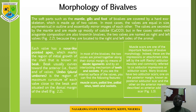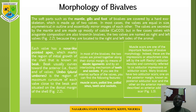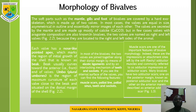Morphology of bivalves: the soft parts such as the mantle, the gills, and the foot of bivalves are covered by a hard exoskeleton made up of two valves. In most cases the valves are equal in size, symmetrical in outline, and essentially mirror images of each other. The valves are secreted by the mantle and are made up of calcite, though in a few cases valves with aragonite composition are also known. In bivalves, the two valves are named as right and left valves because they are located on the right and left side of the animal. Each valve has a nose-like pointed apex which marks the region of initial growth of the shell, known as the beak. The beak usually curves towards the anterior end of the valves. The umbo is the region of maximum curvature of each valve close to the beak, situated on the dorsal margin of the shell.